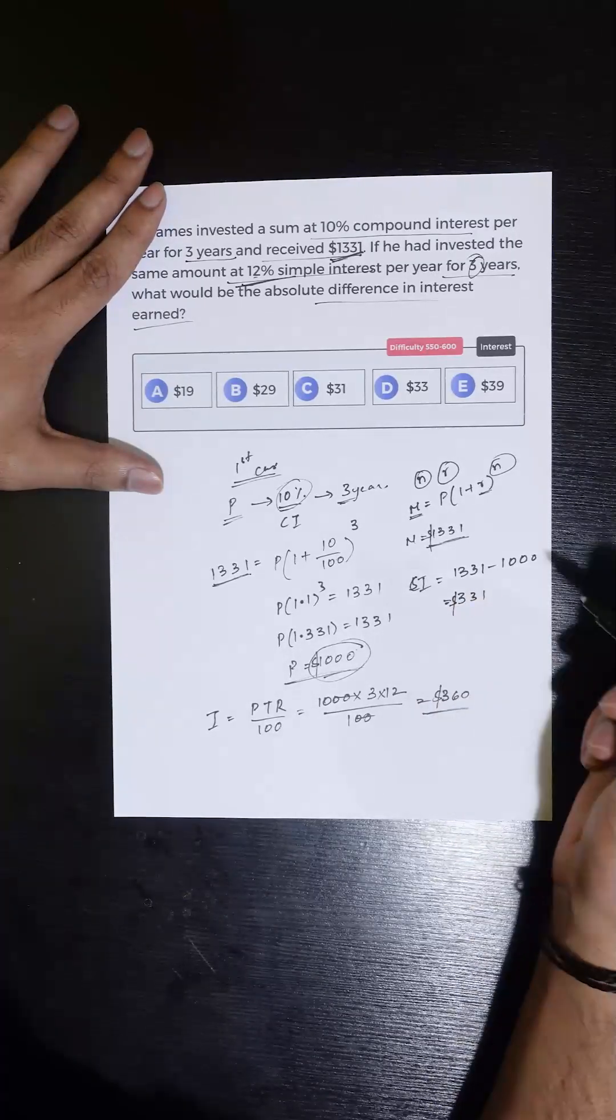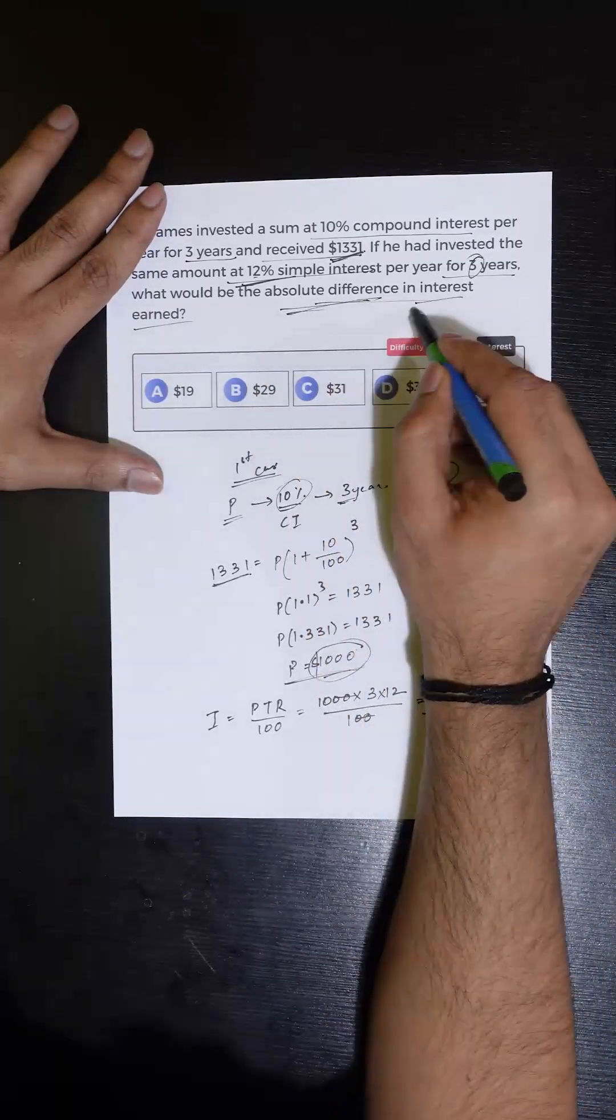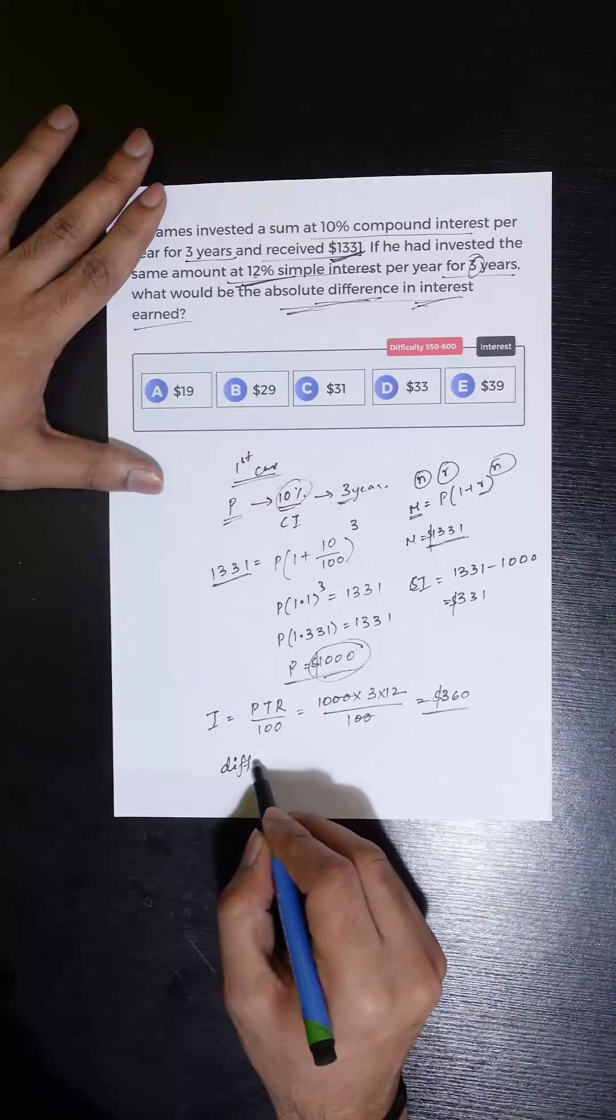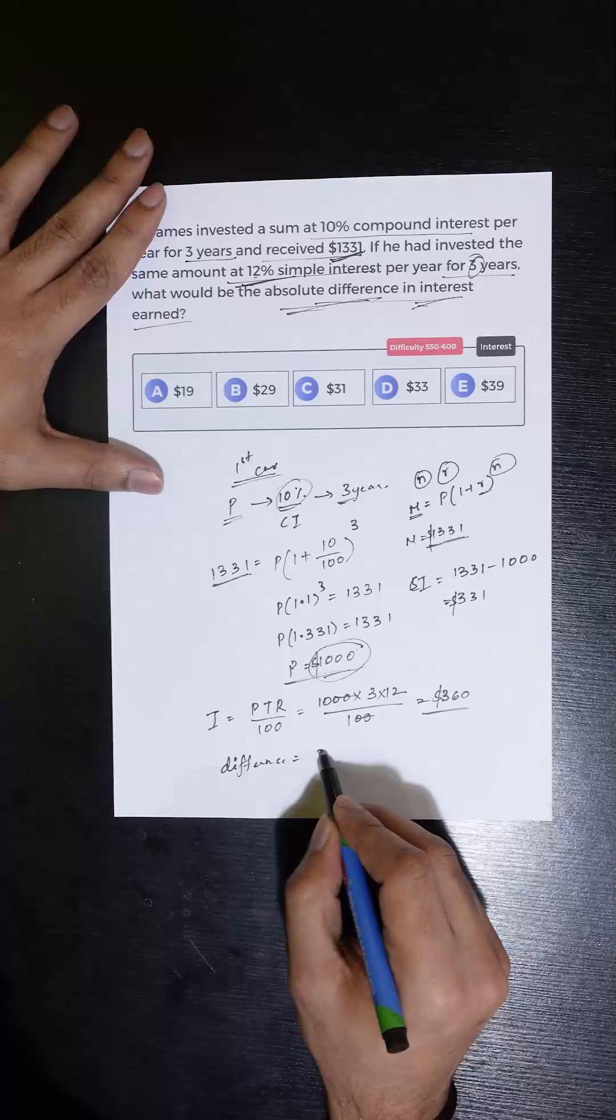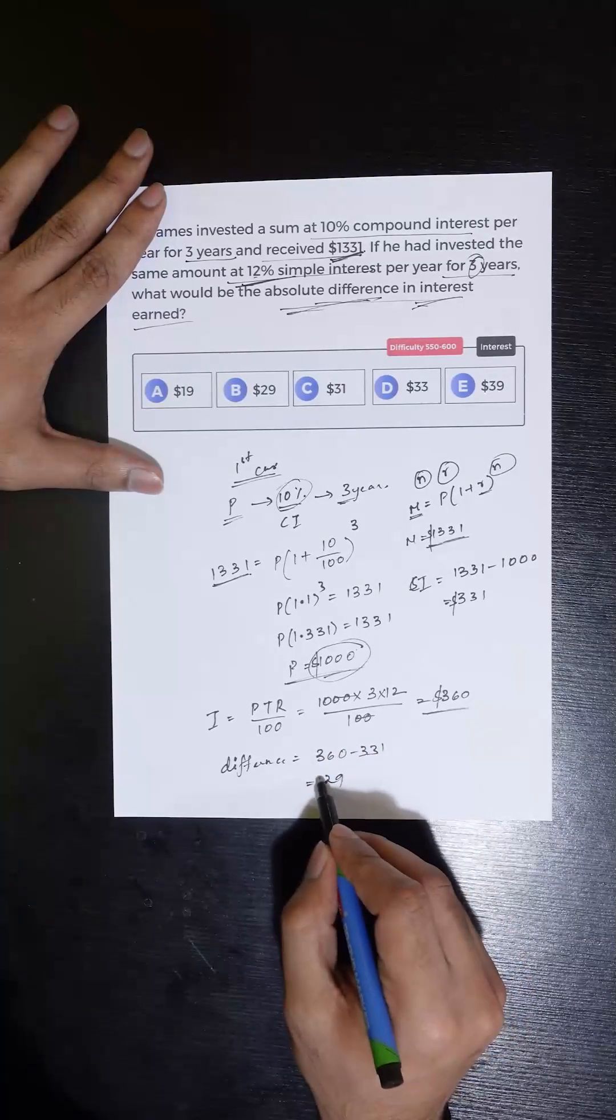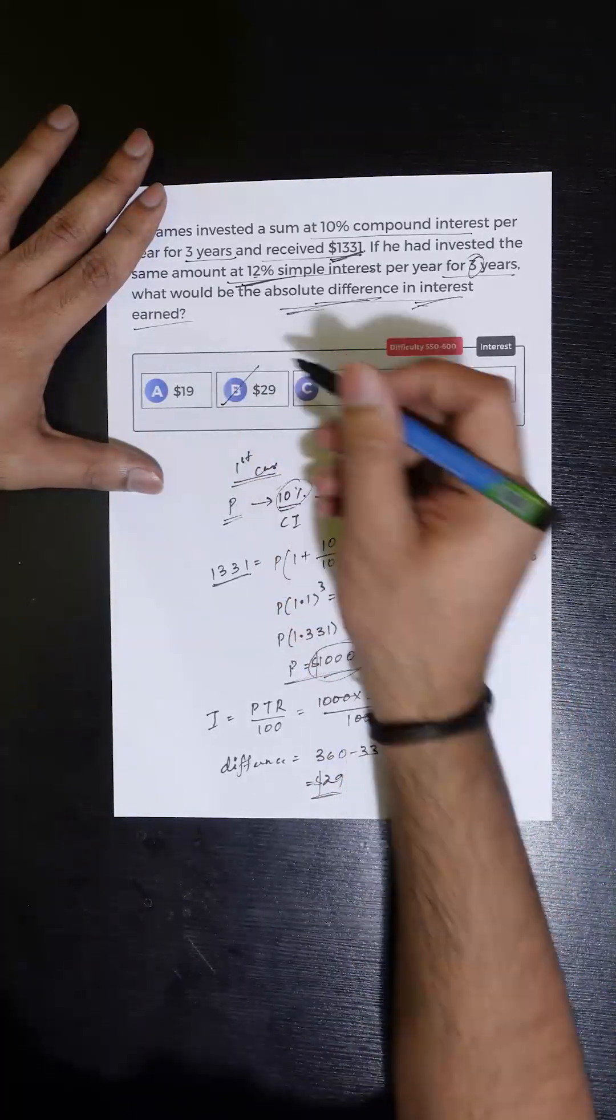Now we are asked to calculate the absolute difference between the interest in both cases. So the difference can be calculated as 360 minus 331, which equals 29 dollars. So the correct answer is option 29.